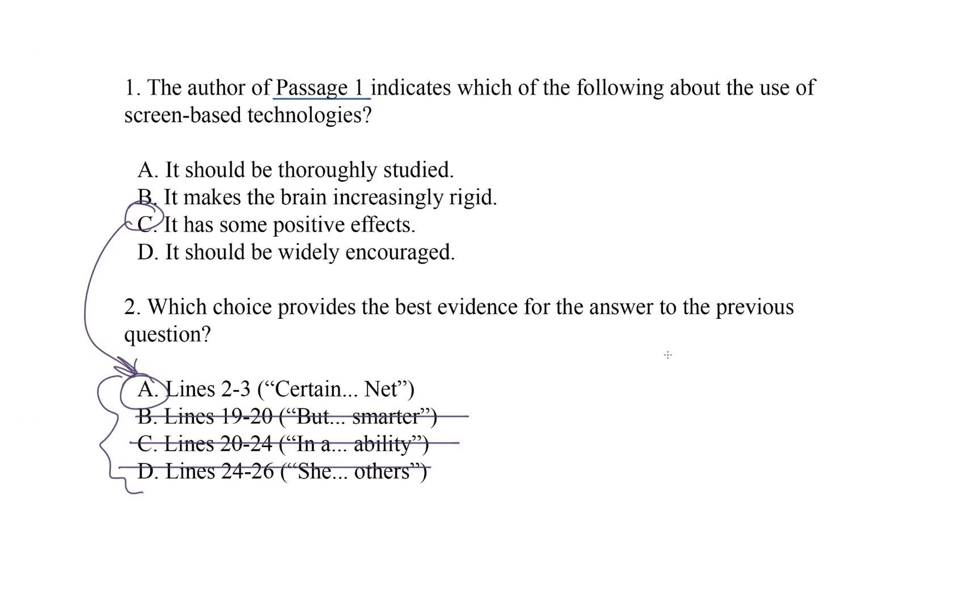Let's recap plan B because it takes some practice to get right. The key is to lock the first question in your head as a test for the choices of the second question. You saw me do that when I asked each choice, do you tell me anything about screen time? I carefully applied that question to each of the choices. Only one of them told me something, and then I found a match in the choices of the first question.